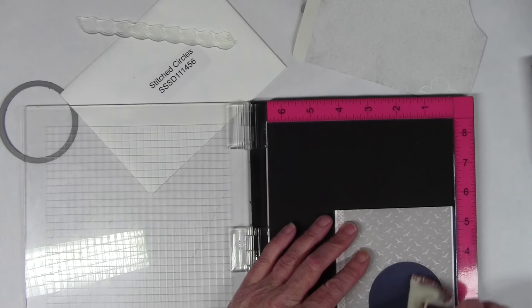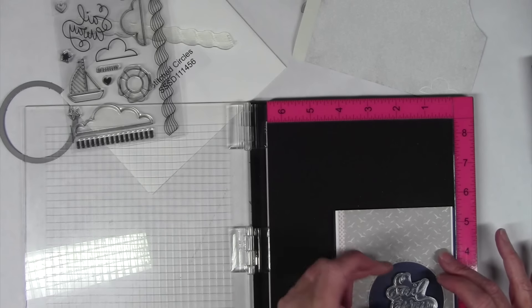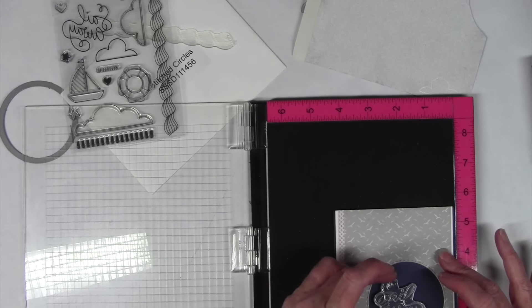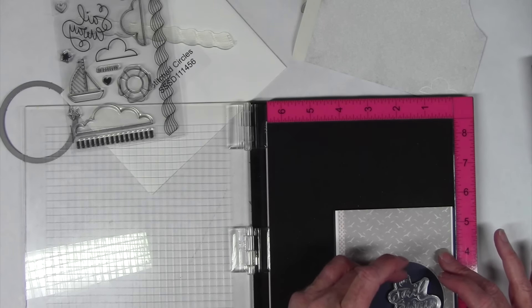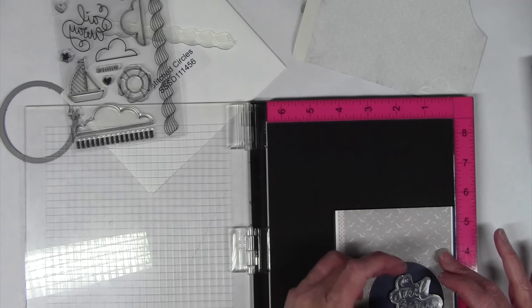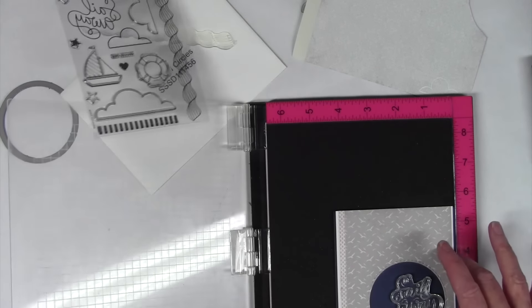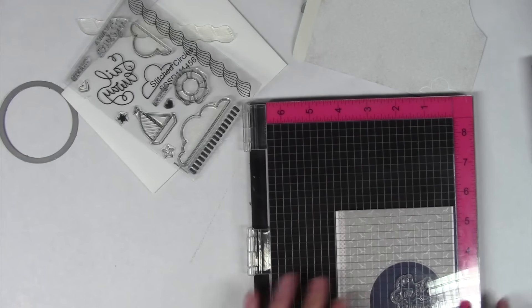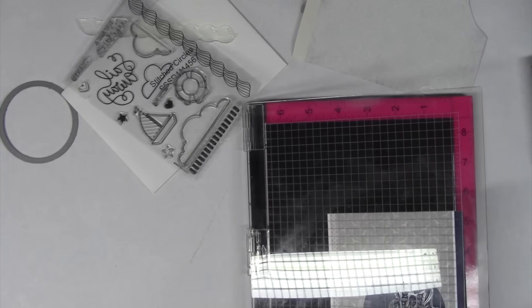So I'm using my anti-static bag first since I'll be white embossing my message and what I love about using this MISTI tool is I can arrange my stamp wherever I want it. I've decided to center it off to the right side and then I can shut the lid and that keeps that stamp in place.